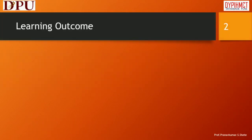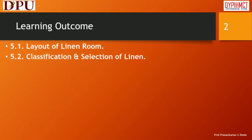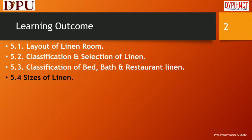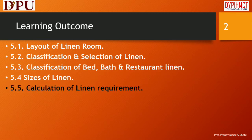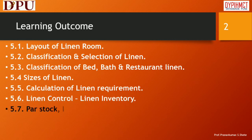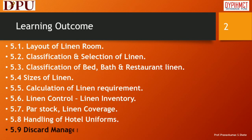Learning outcomes from the chapter: Layout of Linen Room; Classification and selection of linen; Classification of bed, bath, and restaurant linen; Sizes of linen; Calculation of linen requirement; Linen control and linen inventory; Par stock; and linen coverage; Handling of hotel uniforms; and Discard management.